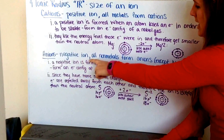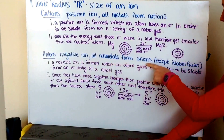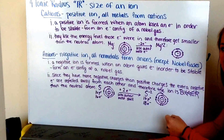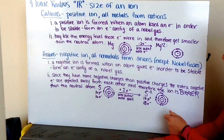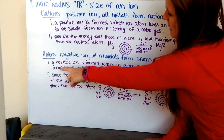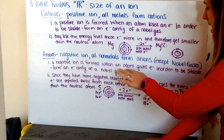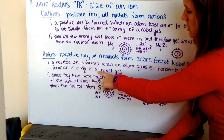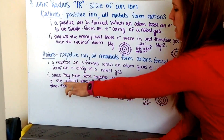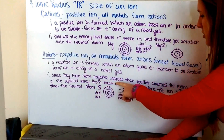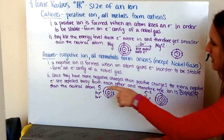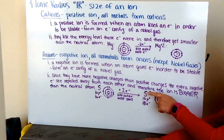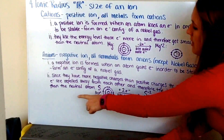Anions are negative ions. All non-metals form anions, except noble gases, because they already have as many electrons as they want — they don't want to add any more or give any away. A negative ion is formed when an atom gains electrons in order to be stable and form an electron configuration of a noble gas. Since they have more negative charges than positive charges, the extra negative electrons are repelled away from each other, and therefore the ion is bigger than the neutral atom.